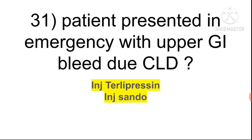Question thirty-one: a patient presenting with upper GI bleed due to chronic liver disease — the drug of choice is injection terlipressin or injection sandostatin (octreotide). Both are correct options. If both are present in your question, prefer terlipressin over sandostatin. Terlipressin is given 1 mg four times a day.